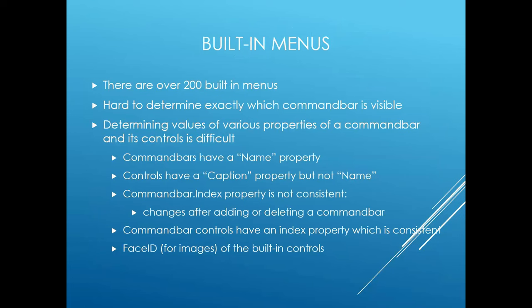Built-in menus: in the version of Access I'm running, 365 32-bit, there are 204 built-in menus in the command bars collection. The problem is that there's no easy way to determine which menu you're seeing when you do a right-click and a menu pops up. That's one of the advantages of the shortcut tool — it itemizes all of the shortcut menus and displays all of the controls that are part of that menu. Command bars have a name property, but controls have a caption property instead of a name property. So if you're trying to enumerate or list the properties of a control, you need to know the caption that's displayed on it.